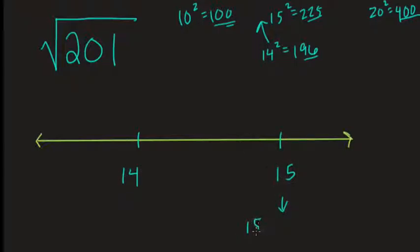Because 15 squared was 225. That's above our target number. And then the next smallest whole number, 14, 14 squared gives you 196, which is too small.